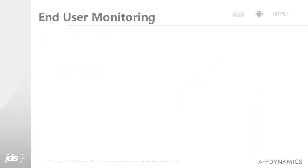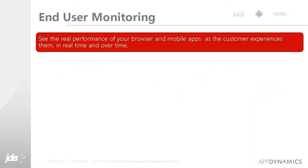So in user monitoring, what are our key goals? First, we want to see the real performance of browser and mobile apps as the customer experiences them, in real time and over time. We want to see what the customer actually experienced — what was their load time, how long did the page take to load, did they experience any errors, were there network issues or content distribution network problems? We also want to see performance tracking over time: is it getting better as we invest, or have we introduced new issues?